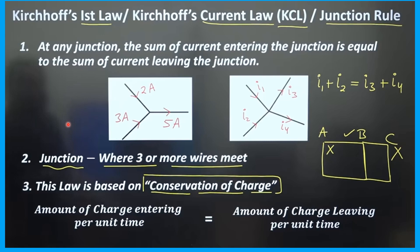First, let us understand what is meant by a junction — where three or more wires meet. Consider this example of a junction where three wires meet at a single point. Always remember, a junction is where three or more wires meet at a single point. Point A is not a junction because only two wires meet there.